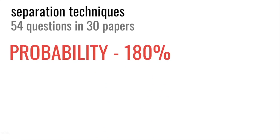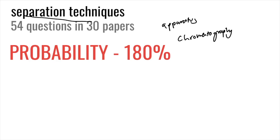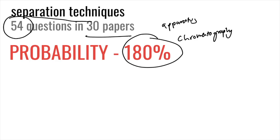The next topic is separation techniques. Under this, we have distillation, filtration, and chromatography. They could ask about different apparatus — a burette, a beaker, filter paper. The main tested one is chromatography, covering solvents and different dyes. There have been 54 questions in 30 papers, meaning some papers have more than one question, giving a probability of 180%. Topics include crystallization, evaporation, distillation, filtration. Separation techniques usually appear around questions two and three.